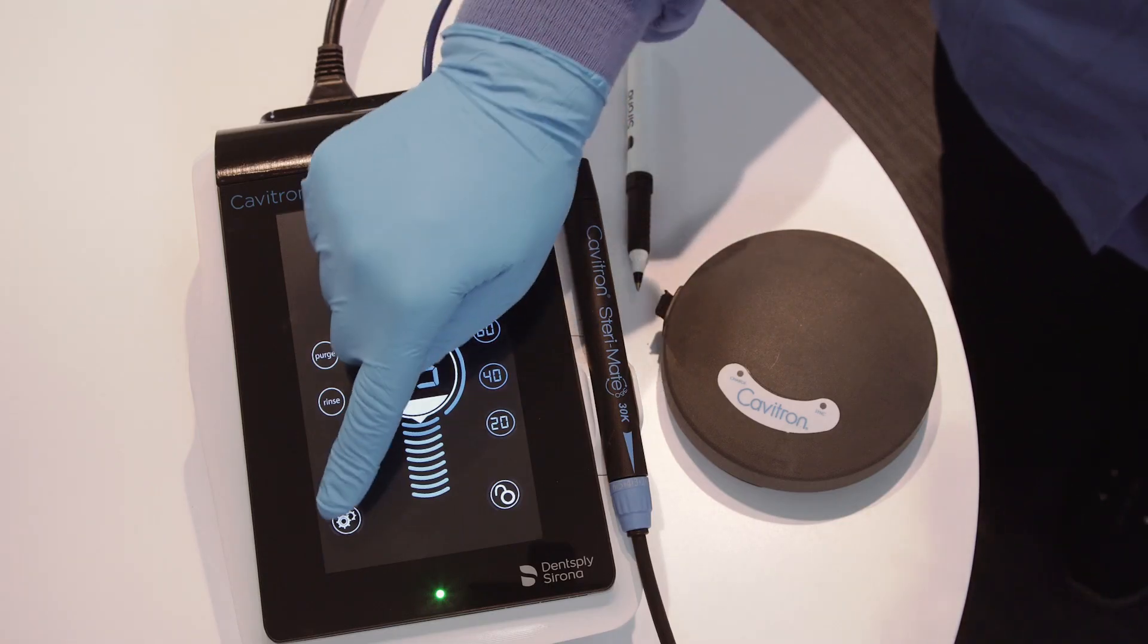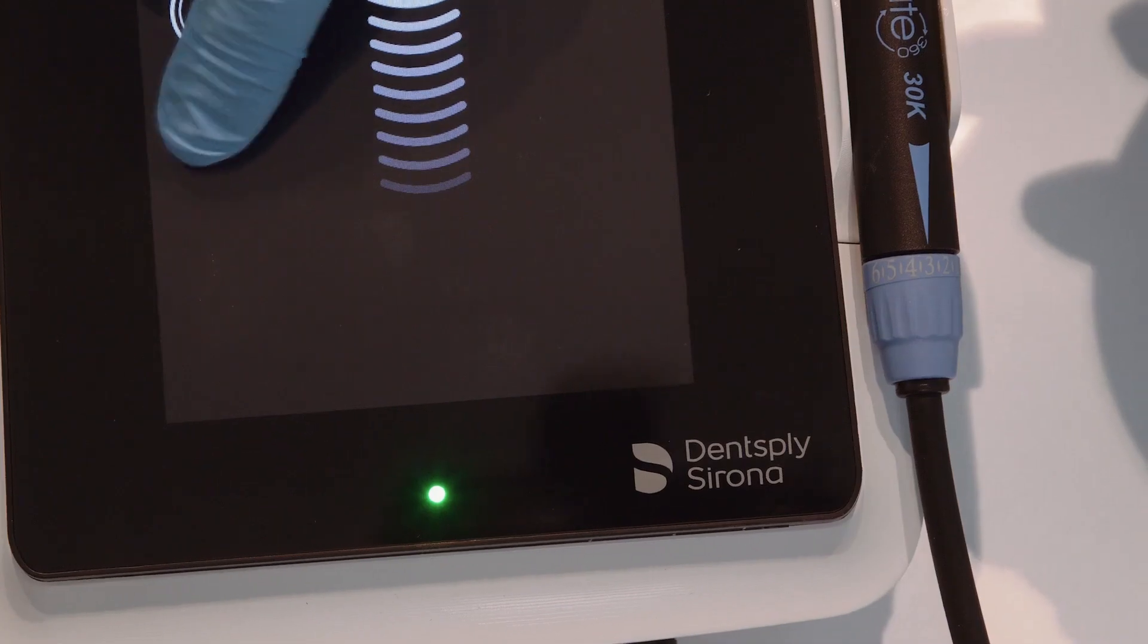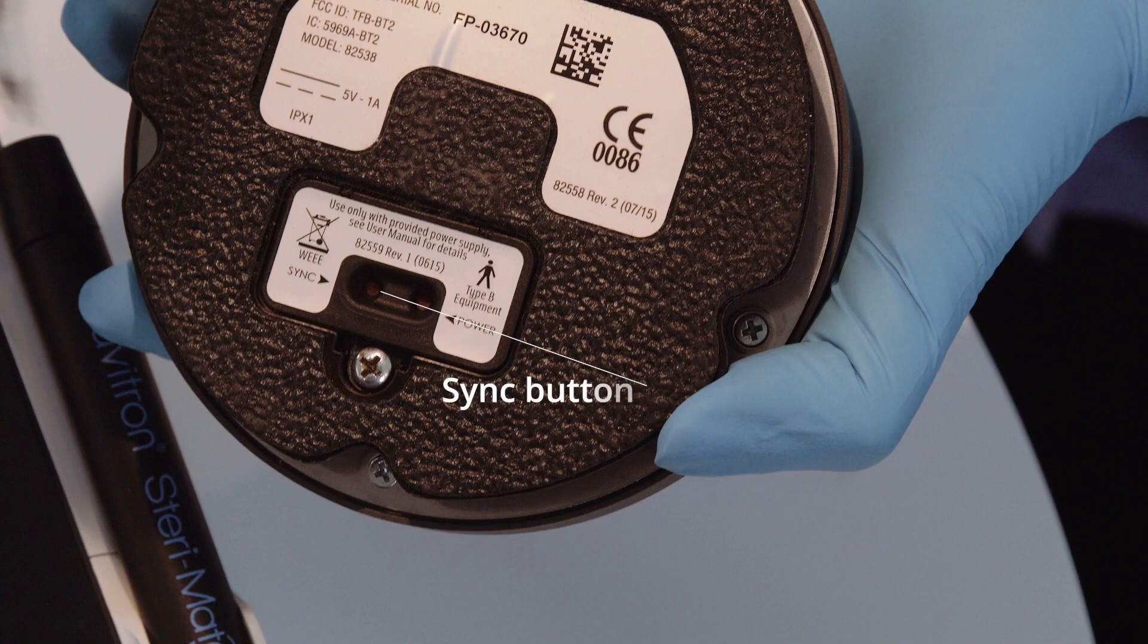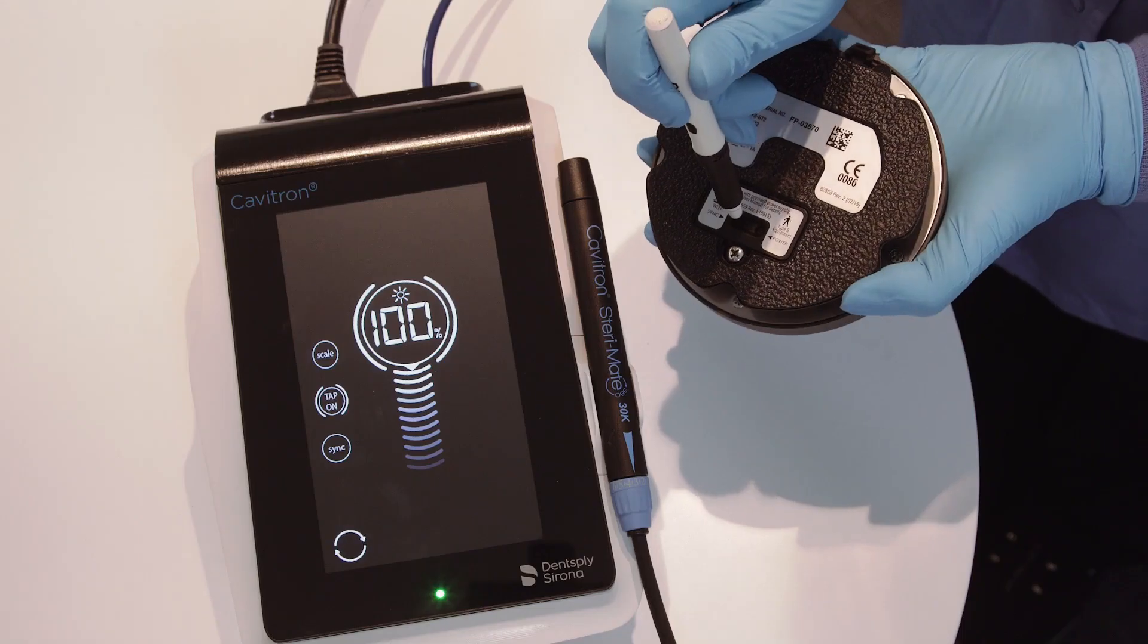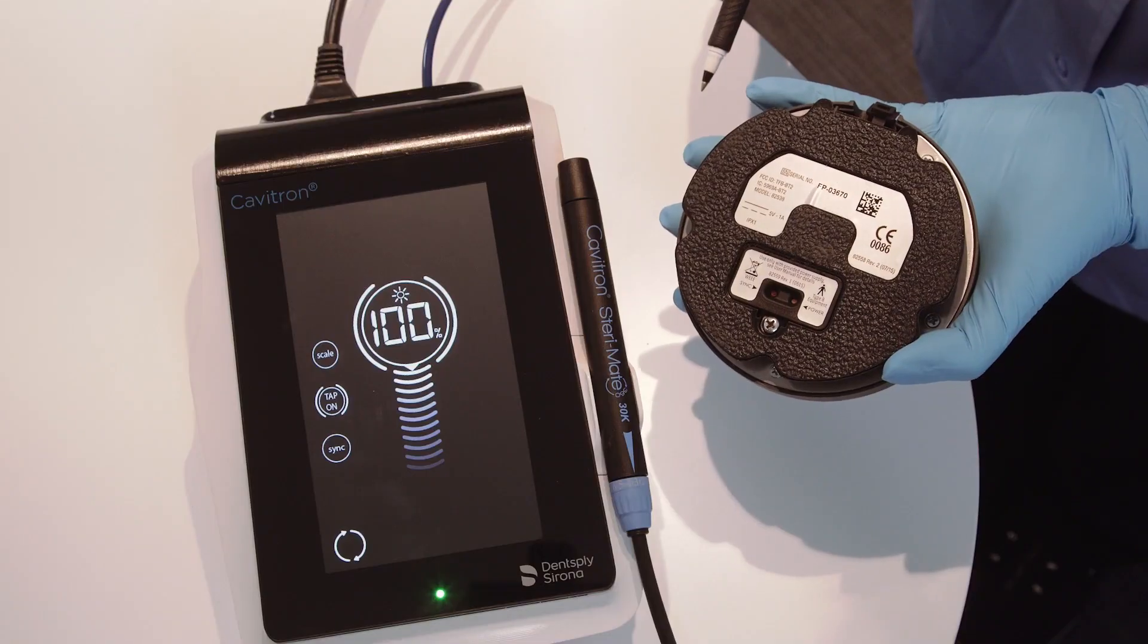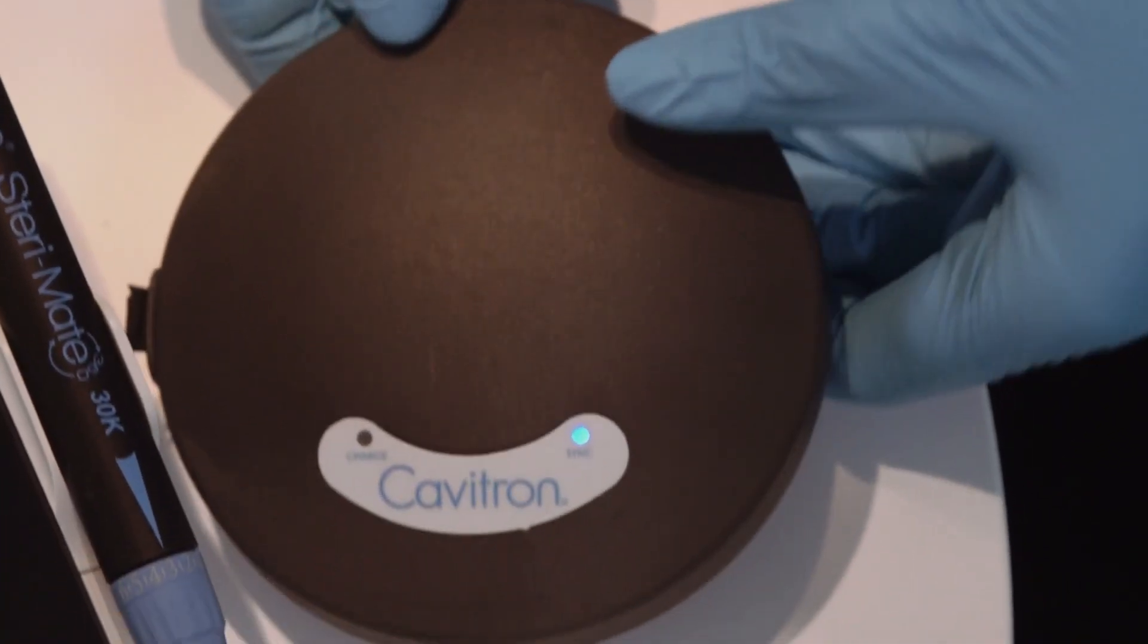Next, press and hold the settings icon until the settings screen appears. Tap the sync icon on the settings screen, followed by pressing the red sync button on the bottom of the foot pedal and hold for at least three seconds. Synchronizing is complete once the sync icon has stopped rotating and sound indication occurs.